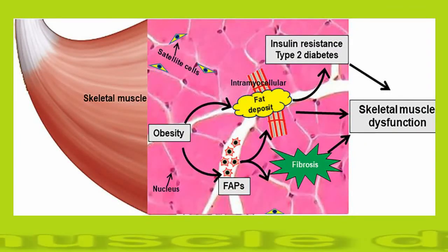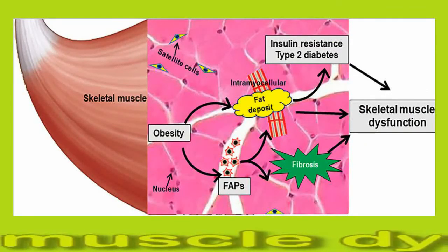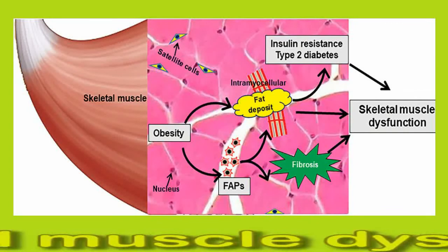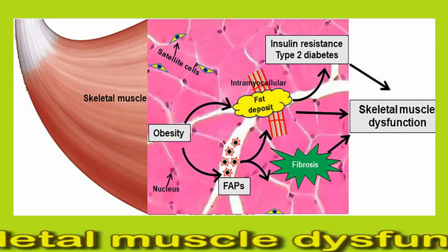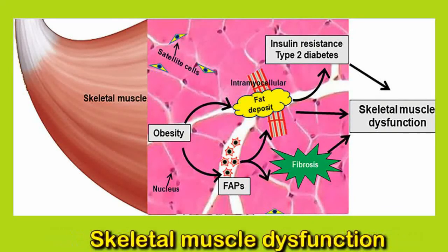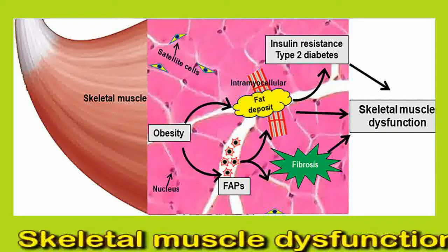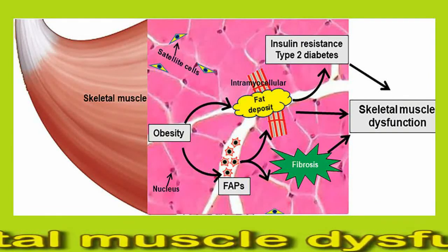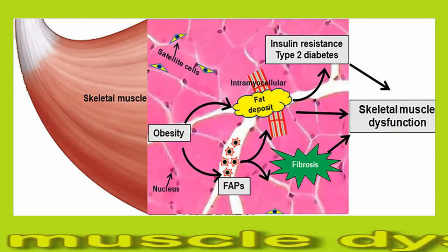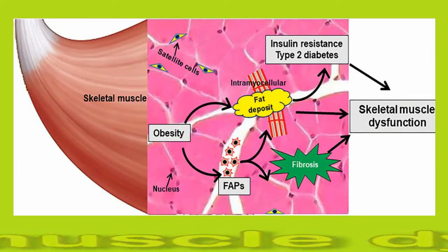Skeletal muscle dysfunction: People whose COPD has reached a more advanced stage can have difficulty engaging in physical exercise and activity. As a result, their muscles start to become weaker. The weakened muscles are more easily fatigued, making it even harder for a person with COPD to exercise.